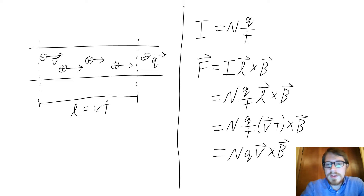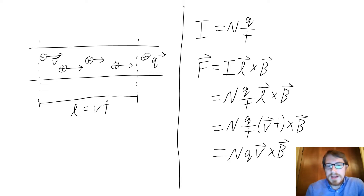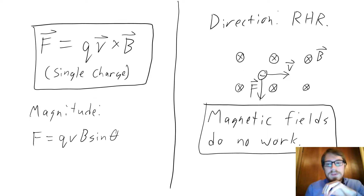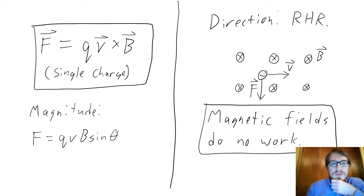We can plug in our expression for current into this equation, and also plug in for L in terms of the velocity of these charges. Once you simplify, time cancels out, and we get the total force on these charges equal to the number of charges times the charge of one of them times the velocity crossed with the magnetic field. The force on a single charge is that total force divided by the number of charges: F = q(V × B).